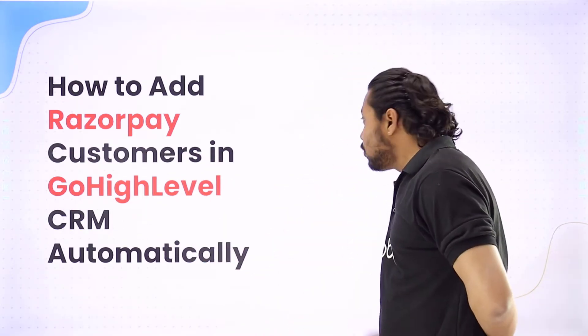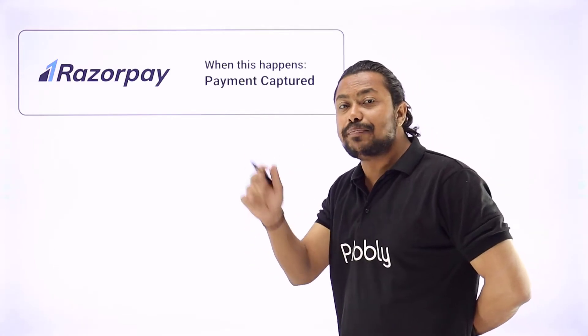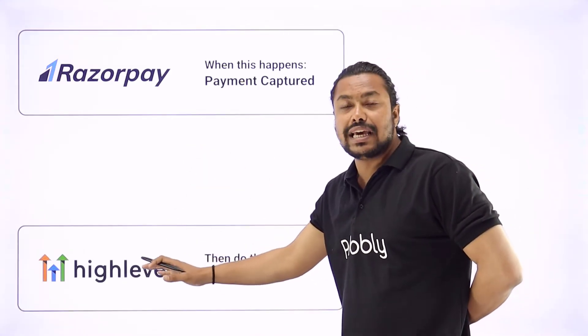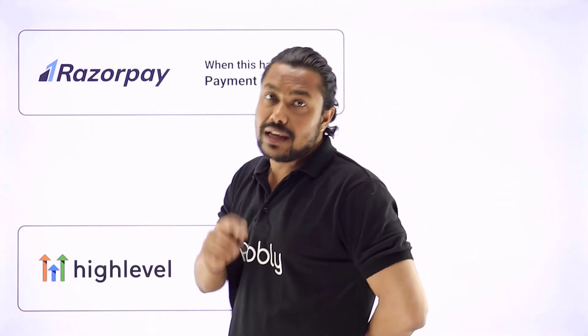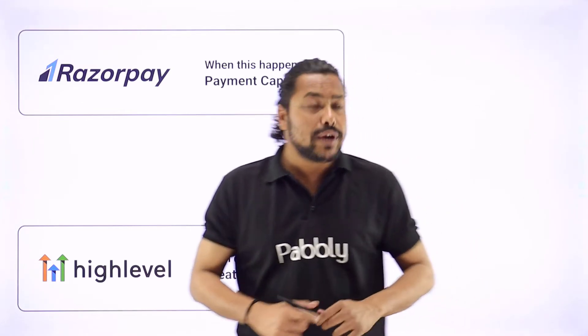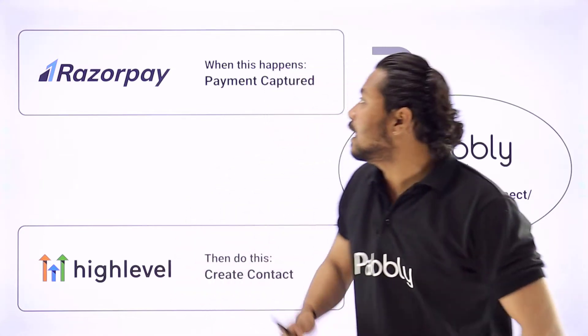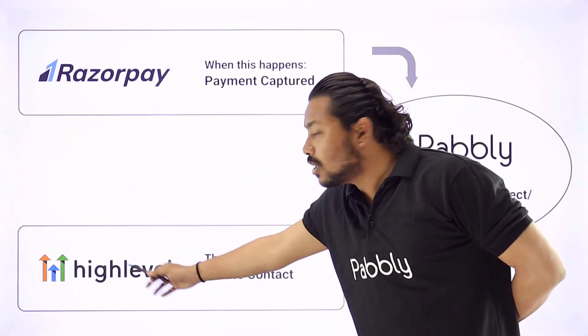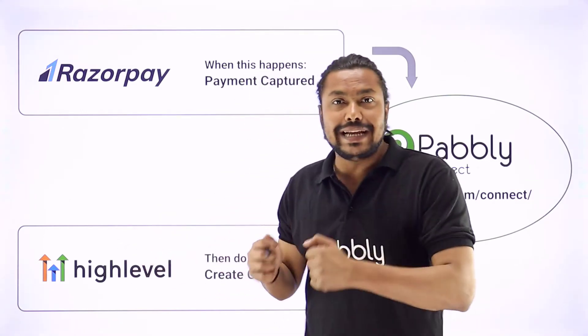Now what is the process we are going to follow here? First, we are going to make a payment through a Razorpay account. The details from that Razorpay payment will go to GoHighLevel CRM and a new contact will be created in your GoHighLevel account. To do this automation, we are going to use an integration and automation software called Pabbly Connect, which will help us connect Razorpay and GoHighLevel together.